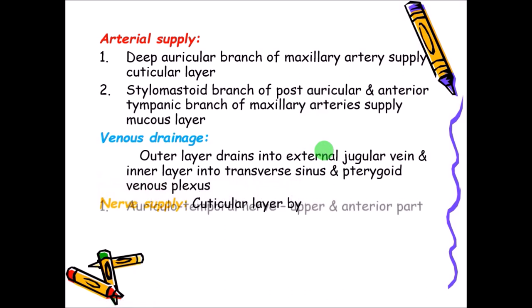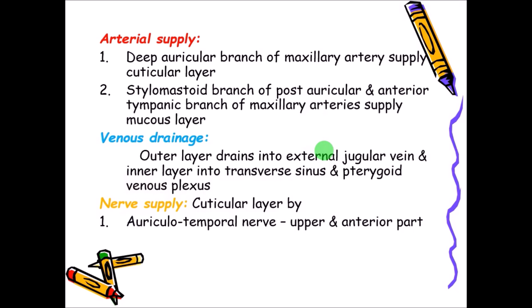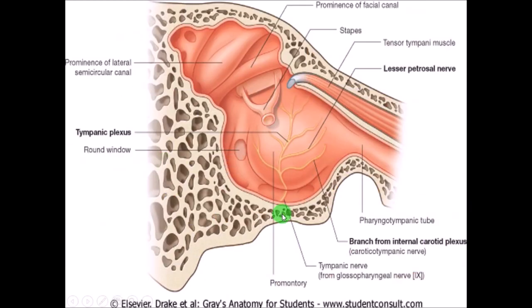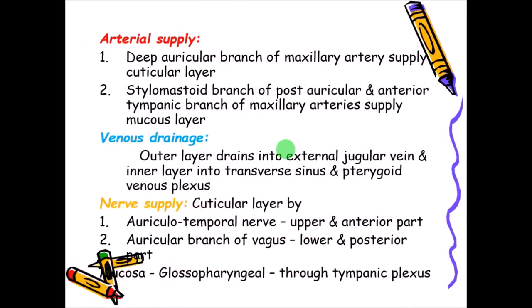The nerve supply of the tympanic membrane: the cuticular layer is supplied by the auriculotemporal nerve to the upper and anterior part, and the auricular branch of the vagus nerve to the lower and posterior part. The mucosal layer is supplied by the glossopharyngeal nerve through its tympanic plexus. The tympanic nerve comes from the glossopharyngeal nerve and forms the tympanic plexus, supplying the mucosal layer.